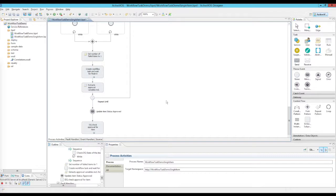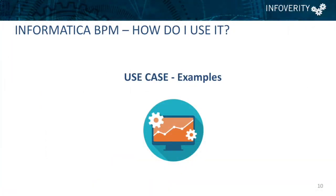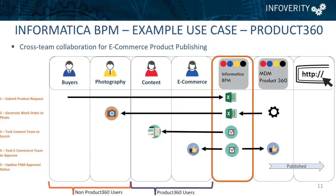Here are some real-world use cases from clients using BPM. The first is cross-team collaboration in the e-commerce space. Groups of users who are not necessarily Product 360 users and groups who are need to coordinate a business process together. The goal is ensuring products get photographed and approved for publication to the website. Buyers submit Excel documents, photographers receive work orders and submit rich media content, and the e-commerce team enriches products and approves their eventual publication to the downstream e-commerce site.